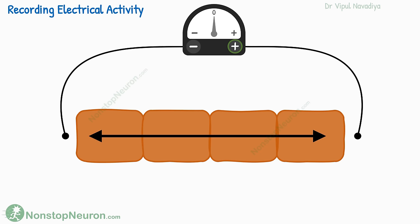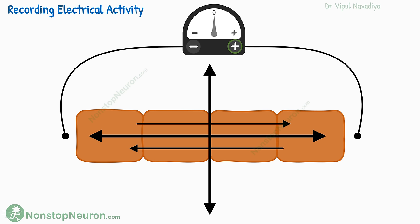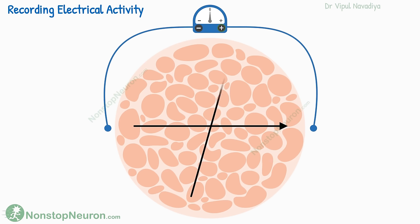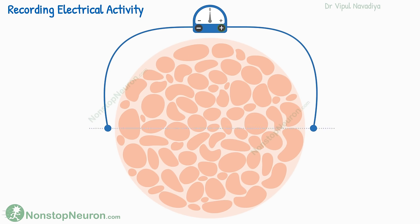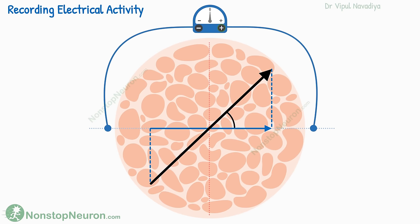Until now, we were working in a straight line in one dimension, where the impulse can only spread from right to left or left to right. Now let's expand into two dimensions. Imagine cells spread on a plane — there are many directions in which the impulse might spread. If we place electrodes on the horizontal axis and current flows at a certain angle, the meter cannot fully detect the current. We need to think of the current as made up of two components: one parallel to the electrode direction, and one perpendicular. The electrodes record only the component that is parallel; the perpendicular component is not recorded.